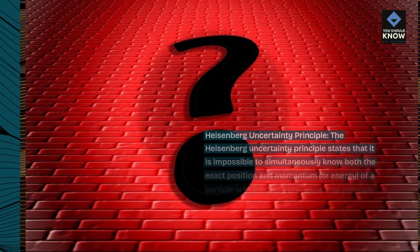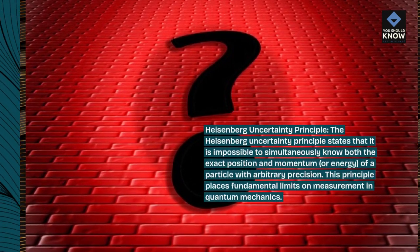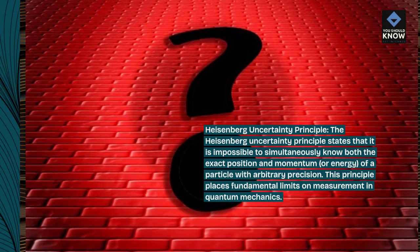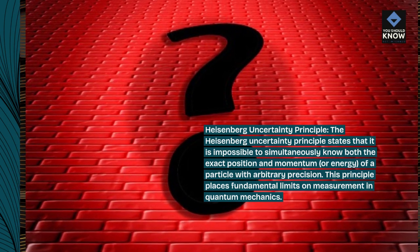The Heisenberg Uncertainty Principle states that it is impossible to simultaneously know both the exact position and momentum, or energy, of a particle with arbitrary precision. This principle places fundamental limits on measurement in quantum mechanics.